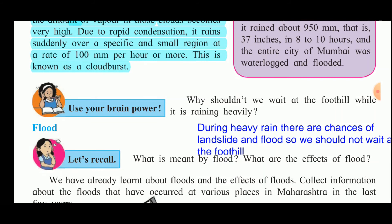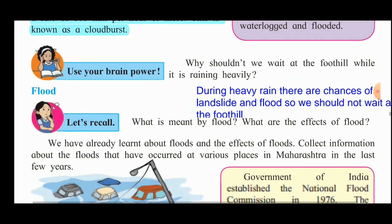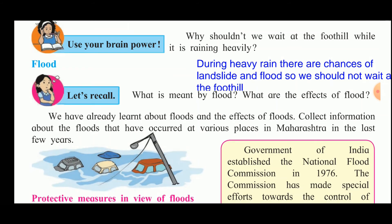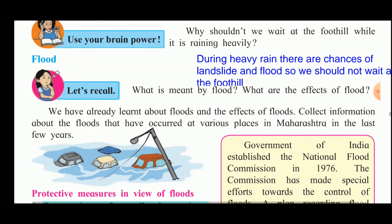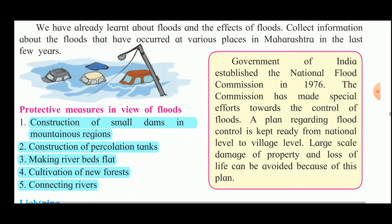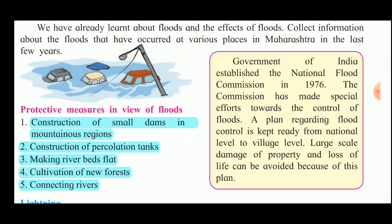During heavy rain there are chances of landslide and flood, so we should not wait at the foot of a hill. The next disaster is flood. The Government of India established the National Flood Commission in 1976. The commission has made several efforts towards flood control. Plans regarding flood control are kept ready from the national level to the village level, and large-scale damage to property and loss of life can be avoided because of this planning.